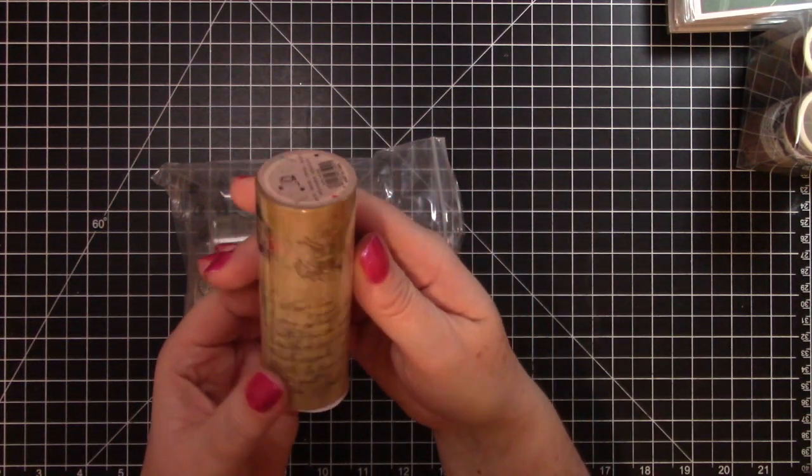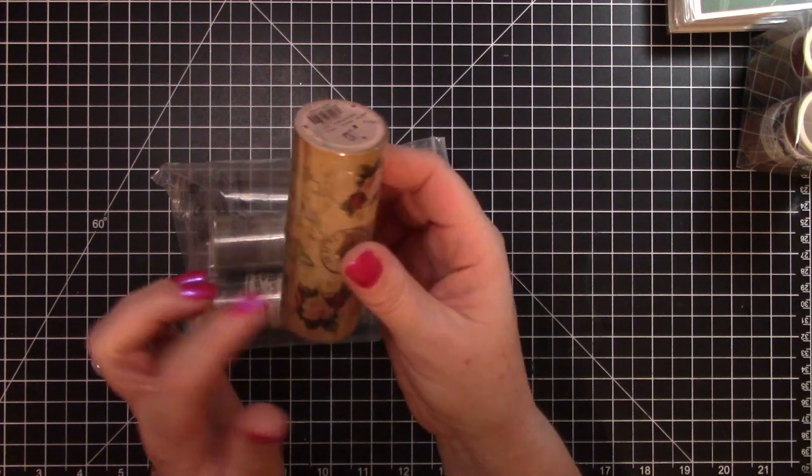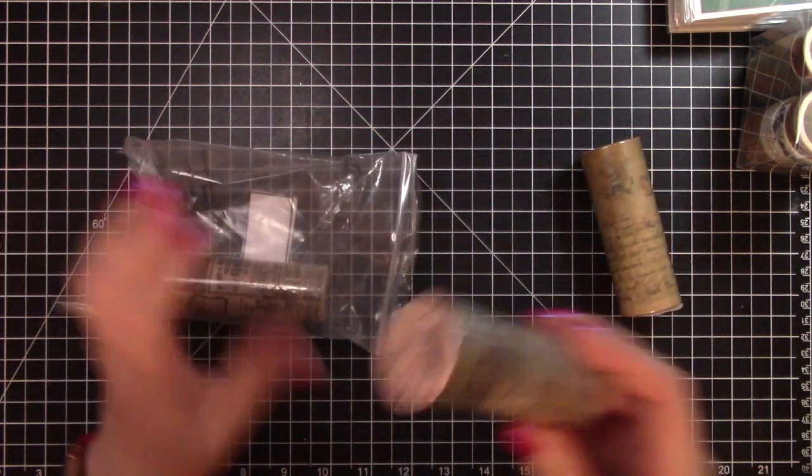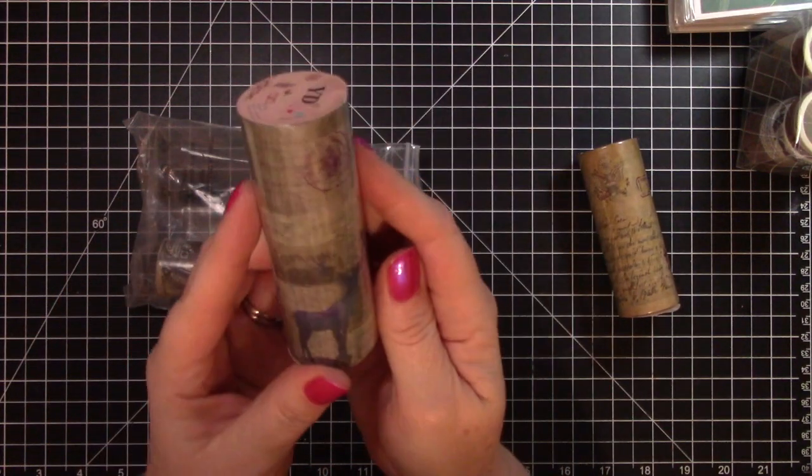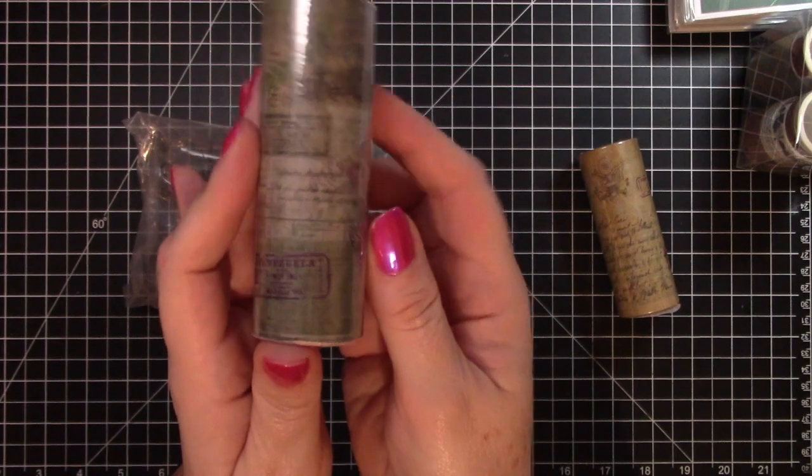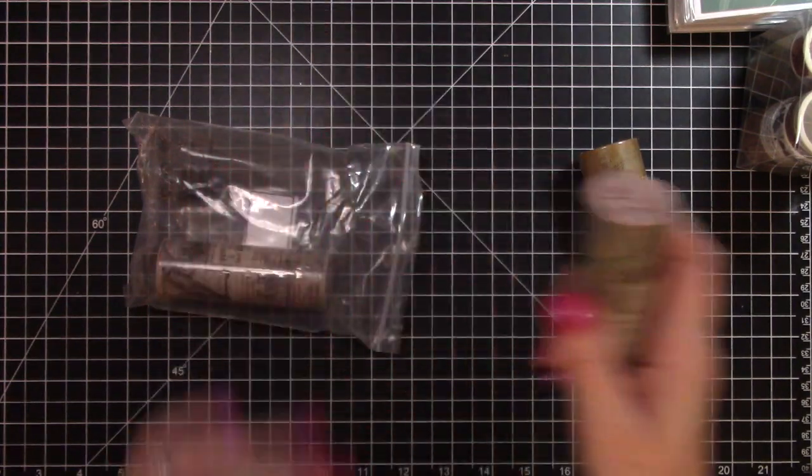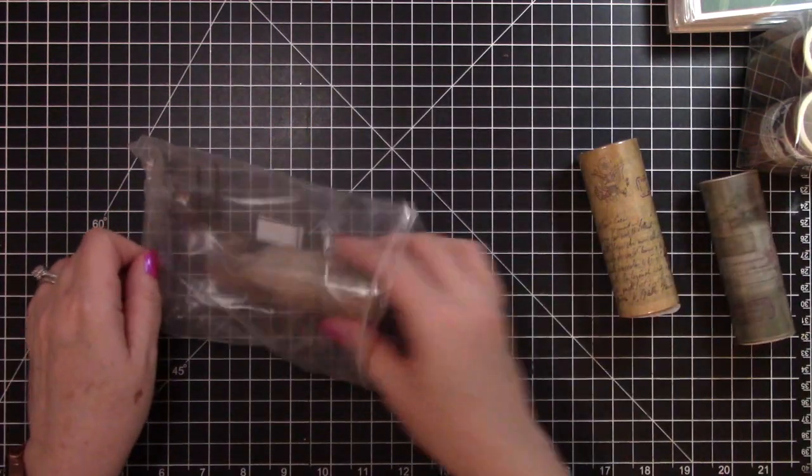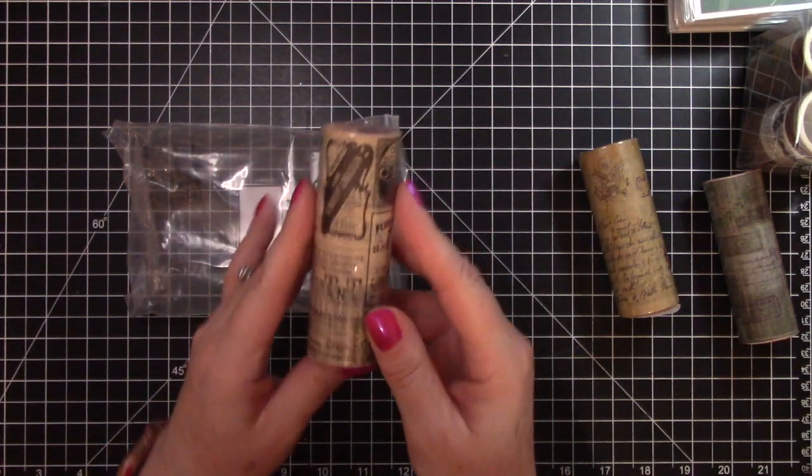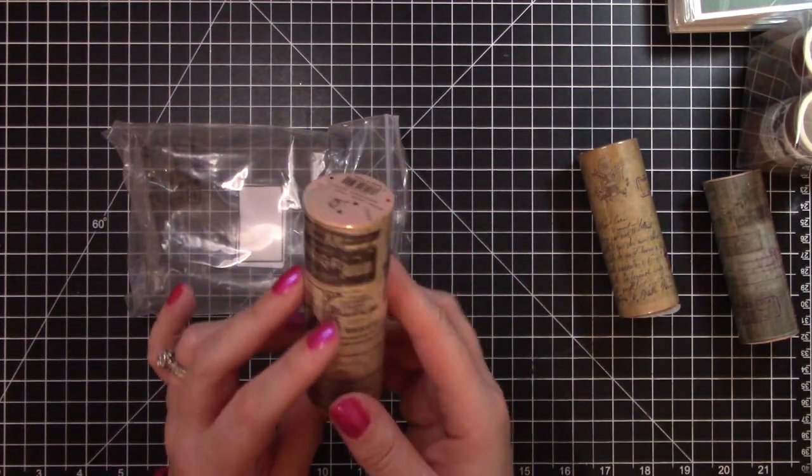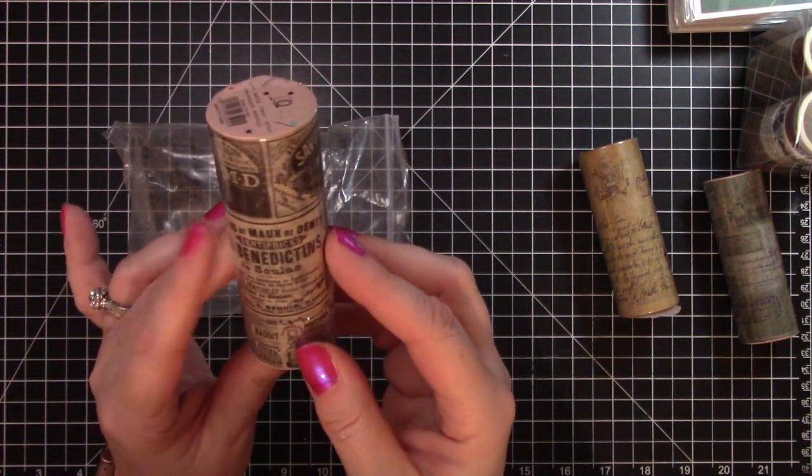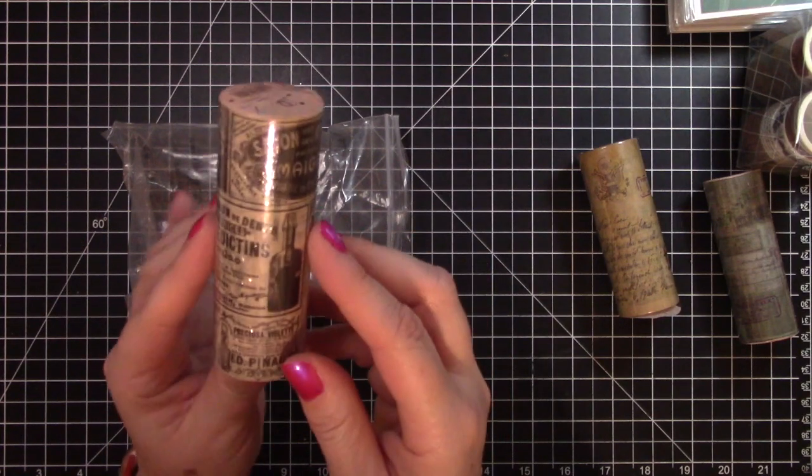So we have this one—it looks like a postcard or something. And then we have this one. And these would make great backgrounds, and since they're four inches you could use them on an A2 size card and it would make a really great background. We have this one that has all of these great ads.